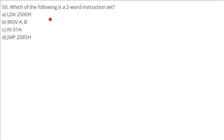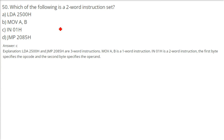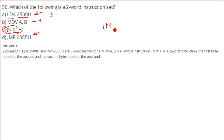Which of the following is a two-word instruction set? The answer is C — IN 01H. LDA 2500H and JMP 2085 are three-word instructions because a direct address is given. MOV A, B is a one-word instruction since no data is included. IN 01H is a two-word instruction: the first byte specifies the opcode (IN) and the second byte (01) specifies the operand.